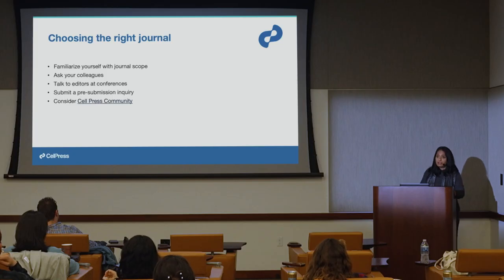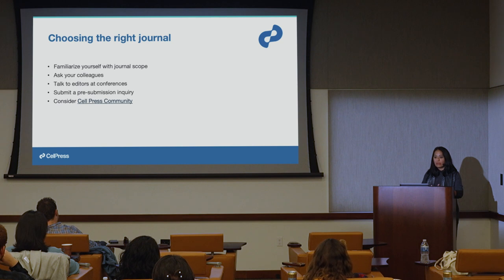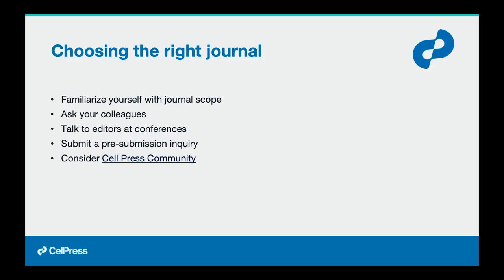It's great to talk to editors at conferences. If you don't see us there, email us for a Zoom call — a pre-submission inquiry — so we can give honest feedback on whether the work aligns with journal scope. Alternatively, you can email us the abstract, some figures, and a cover letter as a written pre-submission inquiry. Another option is submitting to multiple journals simultaneously through the Cell Press Community.